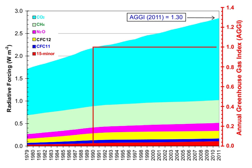Without greenhouse gases, the average temperature of Earth's surface would be about minus 18 degrees Celsius (0 degrees Fahrenheit), rather than the present average of 15 degrees Celsius (59 degrees Fahrenheit). The atmospheres of Venus, Mars, and Titan also contain greenhouse gases.